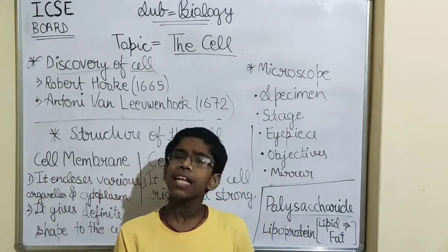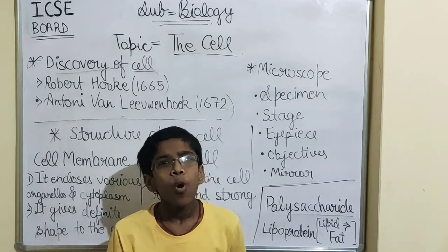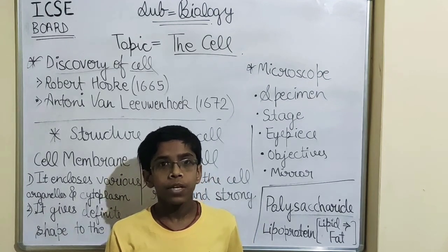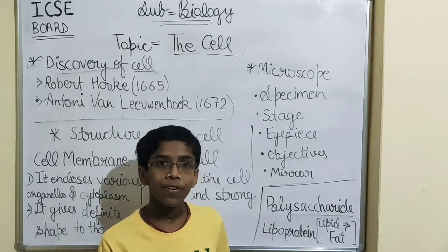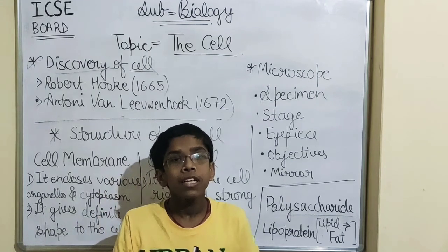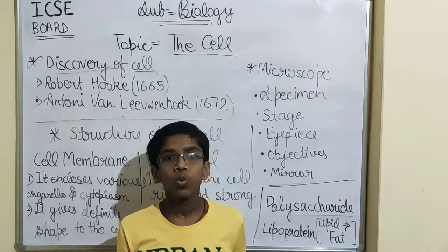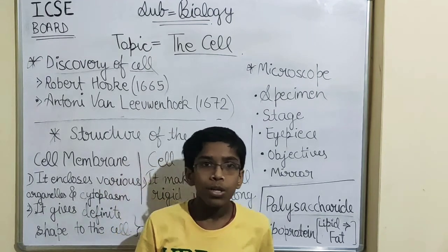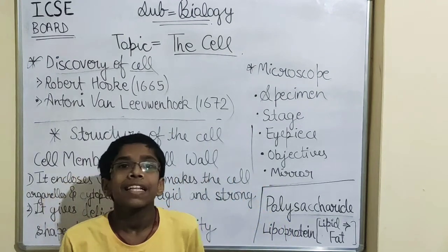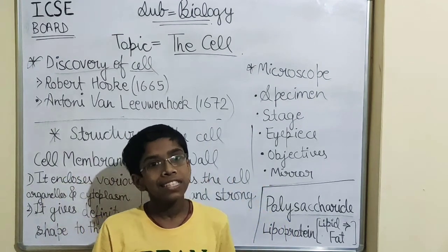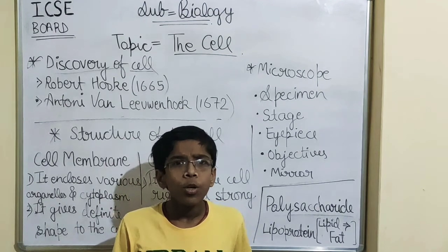Friends, what is a cell? A cell is the smallest unit of life that has life on its own and can exist on its own. Cell is the smallest thing that has life and can exist on its own. We all are made up of cells.